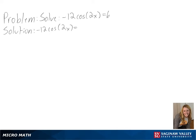To solve our trig equation, we first need to isolate cosine of x. We can do this by first dividing both sides by negative 12, and we will get cosine of 2x equals negative 1 half.